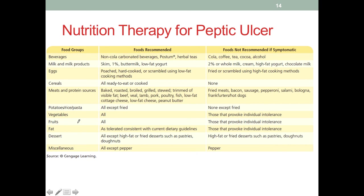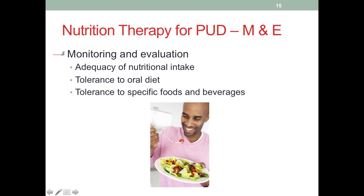Here is a summary of nutrition therapy for peptic ulcers. Patients may have many questions about foods, and we want to be able to give them examples of recommended food groups and what should be avoided or reduced — please read through this table carefully. To monitor and evaluate PUD therapy, we check the adequacy of nutritional intake given the risk of malnutrition, and follow up on tolerance of the oral diet and specific food and beverage items.